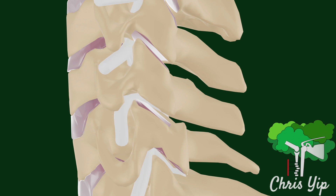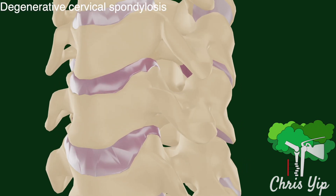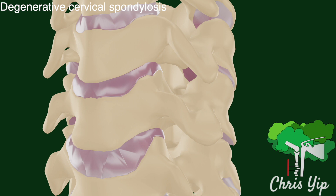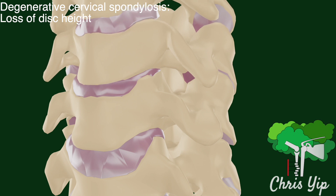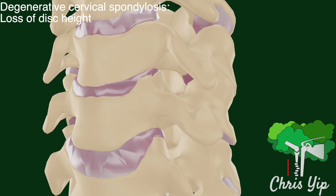Compression at that site can lead to cervical radiculopathy. One cause is degenerative cervical spondylosis, which contains a range of pathologies. Loss of intervertebral disc height can lead to the collision of adjacent vertebral bodies at the uncovertebral joints.